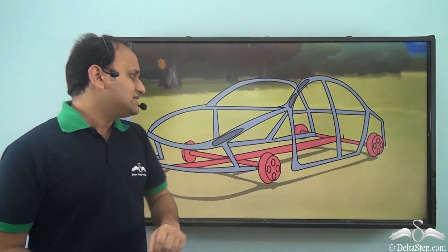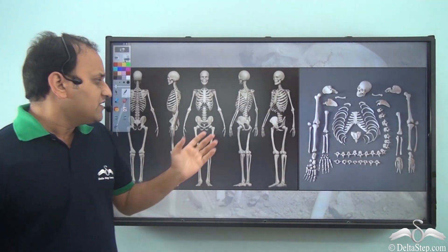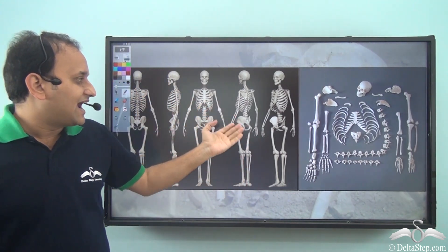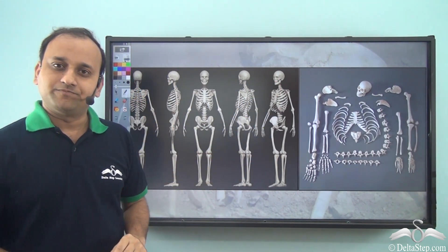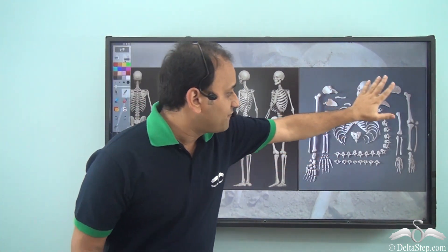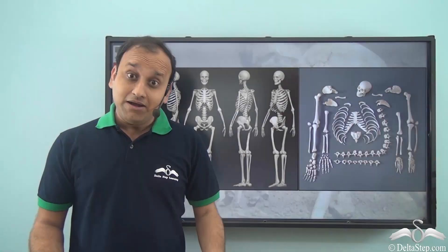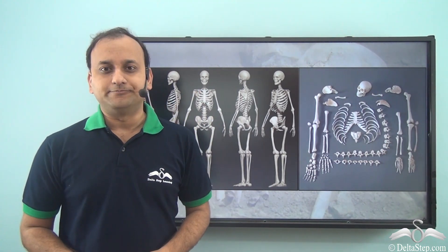Similar to this, even our body on the inside has this type of structure. It is made up of a variety of bones, and because of this structure, our body is strong and sturdy.